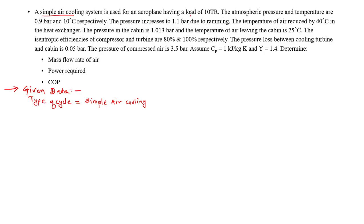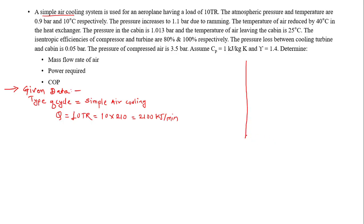The cooling load is 10 TR, denoted by Q, which equals 10 × 210 = 2100 kJ/min, since one TR equals 210 kJ/min. The atmospheric pressure and temperature are 0.9 bar and 10 degrees Celsius. Now I will draw the T-S diagram — it is better to note the numbers with the diagram. First I will draw the line of atmospheric pressure.